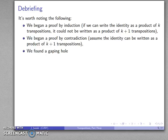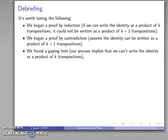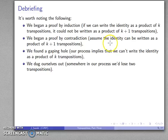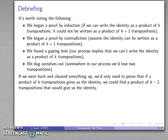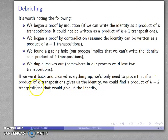Except we found a gaping hole in our proof. Our process implied that we could not even write the identity as a product of any number of transpositions. We dug ourselves out of the hole by figuring out that somewhere in this reduction process, we'd actually lose two transpositions. Going back to clean up the proof, the really important thing we found is that if I can write a product of k transpositions that gives us the identity, I can rearrange that to be a product of k minus 2 transpositions that will also give us the identity.